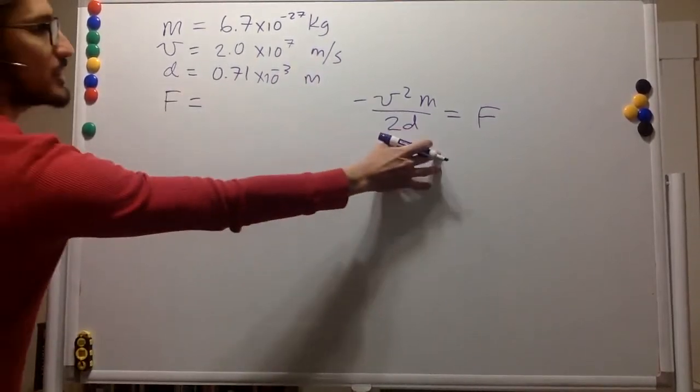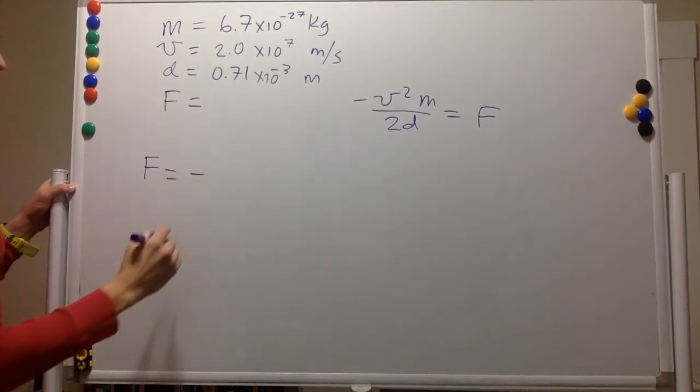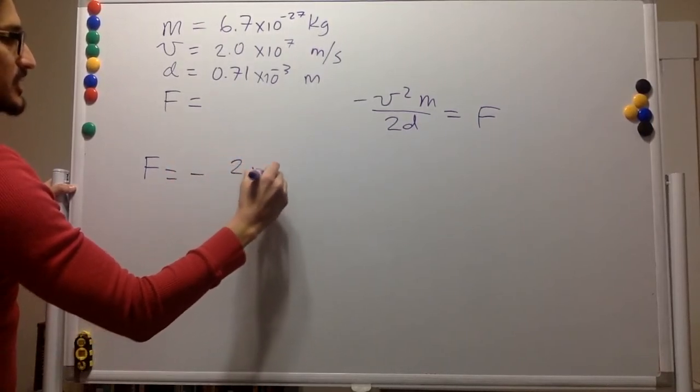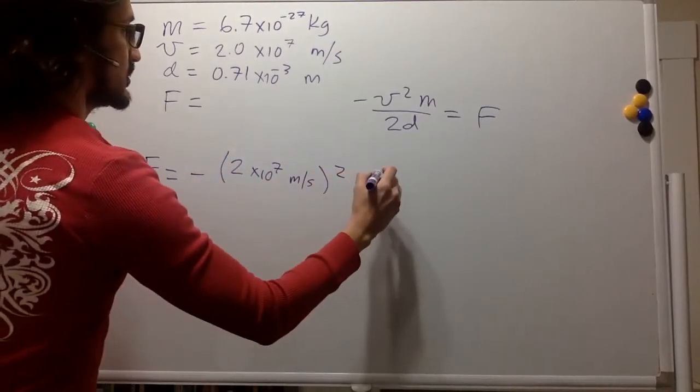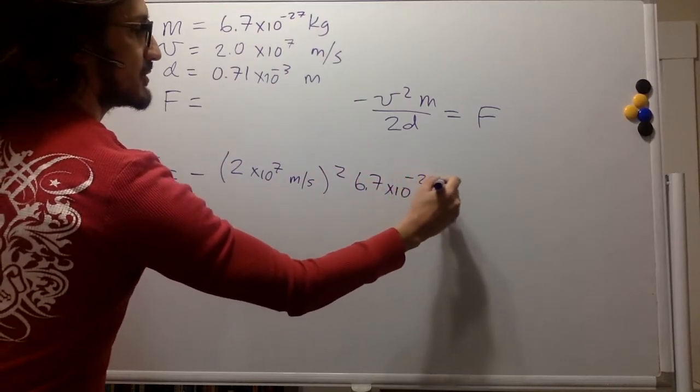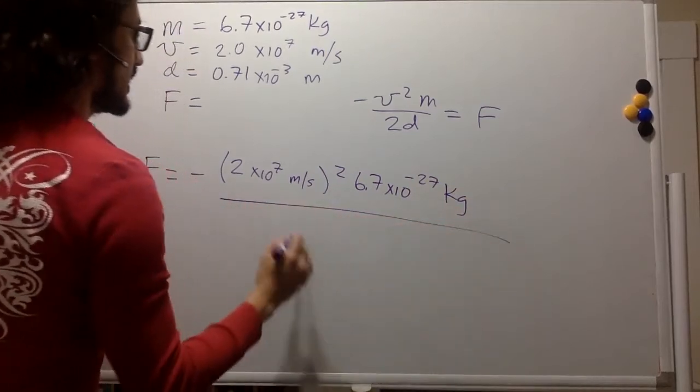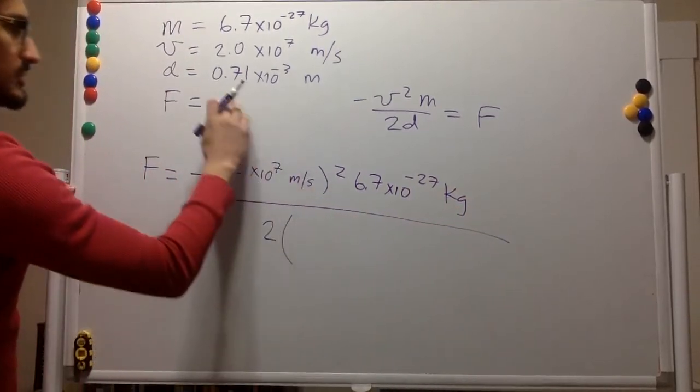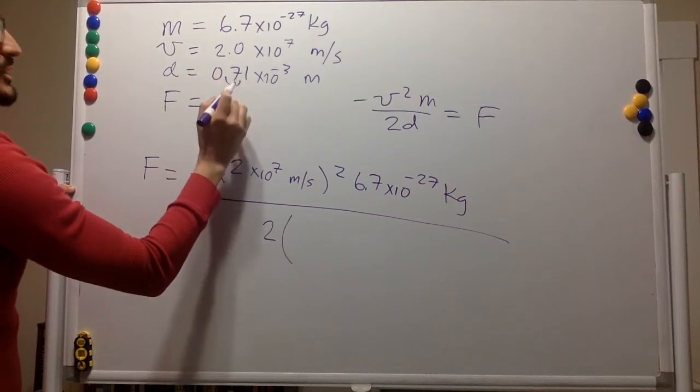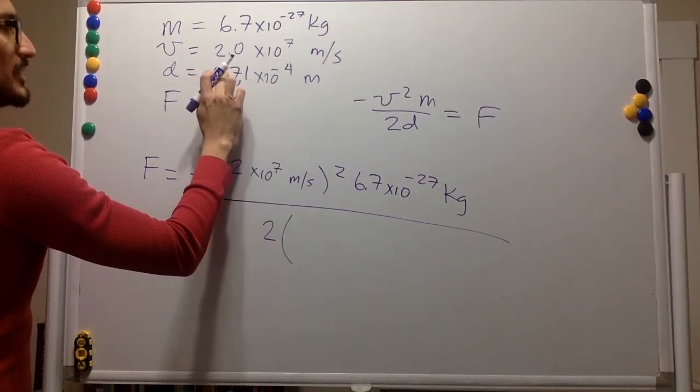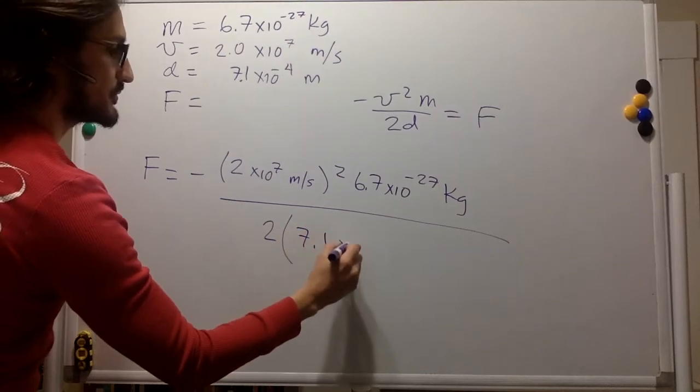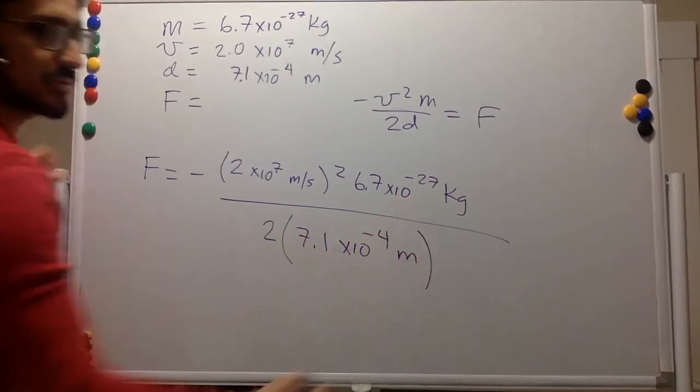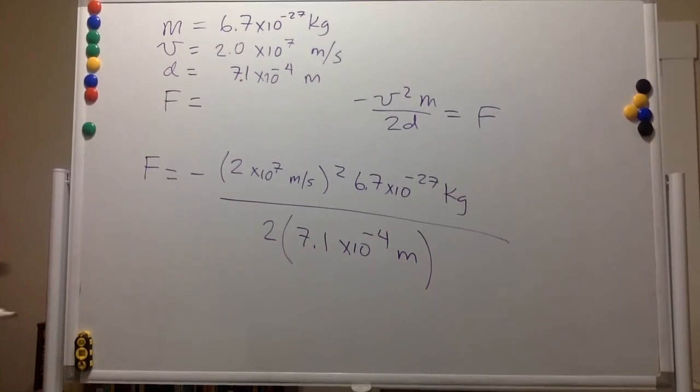So what is the force? Well, we have our equation over here. Of course, it's going to be minus 2 times 10 to the 7 meters per second squared. The mass is 6.7 times 10 to the negative 27 kilograms. And this is twice the distance. We can just move this point over here. This will be negative 4. And this will be 7.1 meters. So all of our units are consistent. So the part above is going to be the numerator.